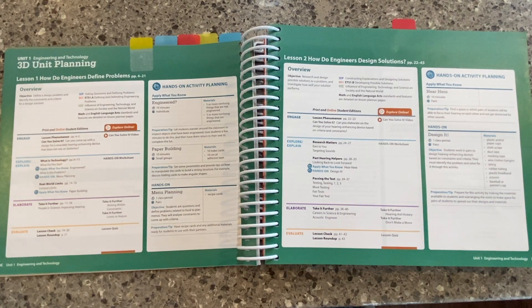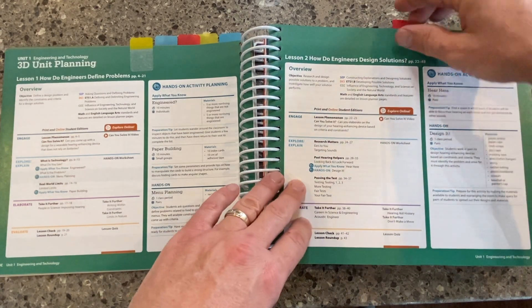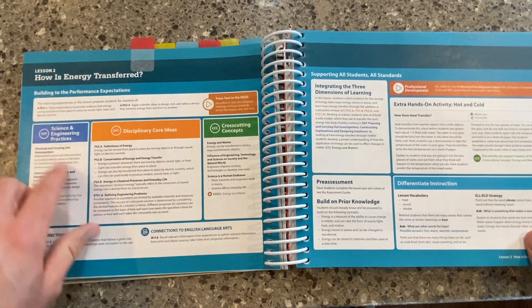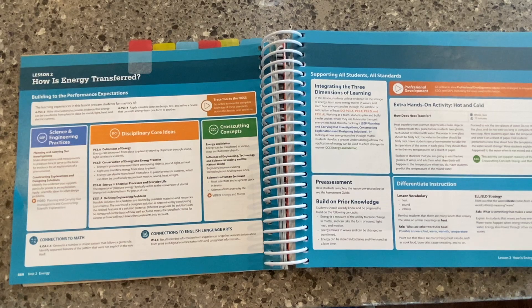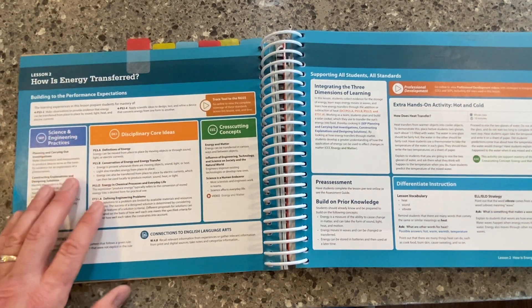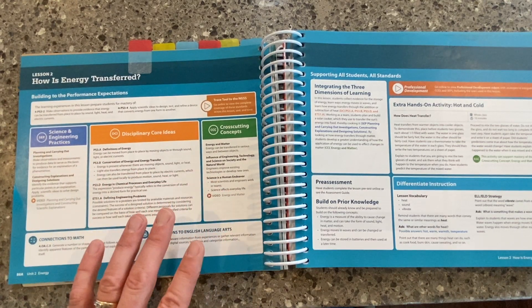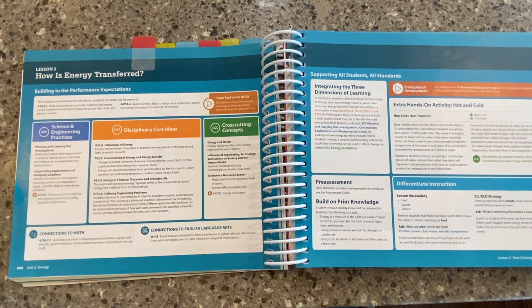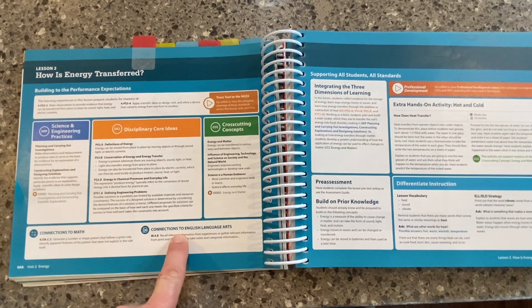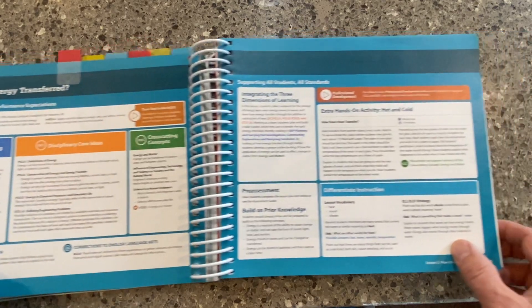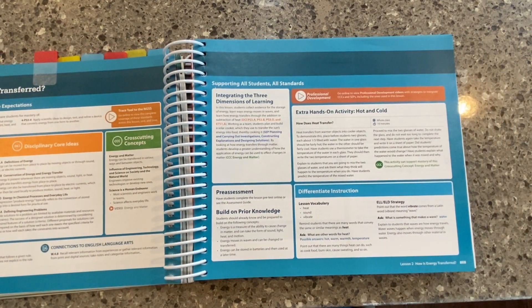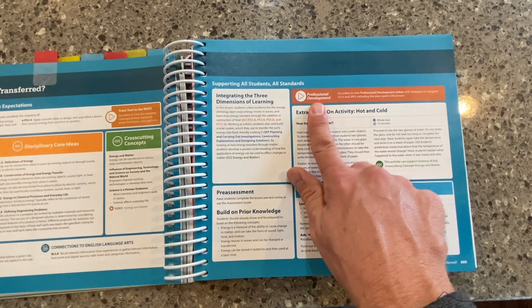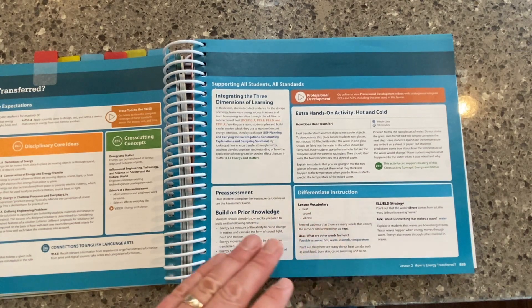We've looked at the yearly planning and unit planning pages, so now let's take a look at the lesson planning pages. As we open up to a lesson inside the program, we can see our lesson title up at the top. We're looking at things at a more granular level — we still have those three dimensions of learning, but really broken down so you know exactly what we're focusing on under each category. We even reference professional development videos around those standards. We've also got those cross-curricular connections to both English language arts and mathematics, along with all the tools needed for teaching and learning — things like extra hands-on activities, professional development videos and resources, and options for differentiation, assessing, and building on prior knowledge.